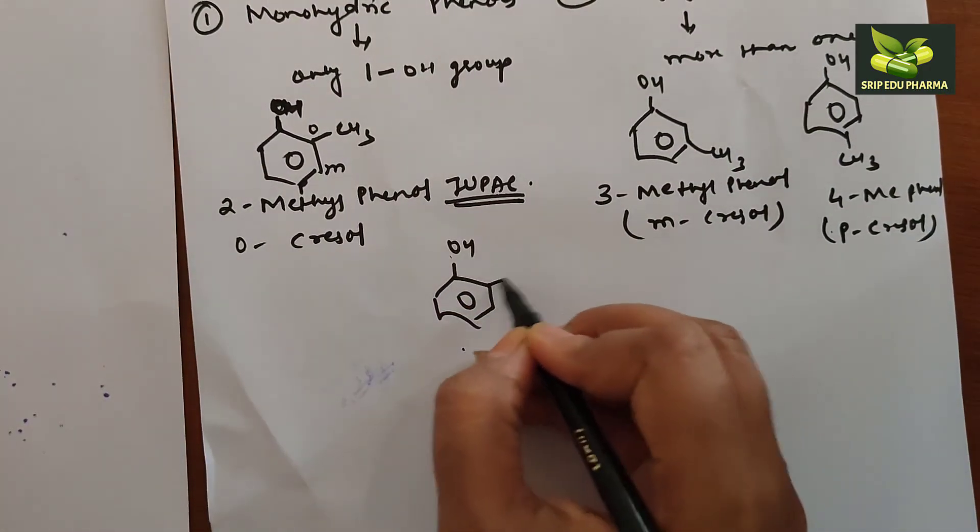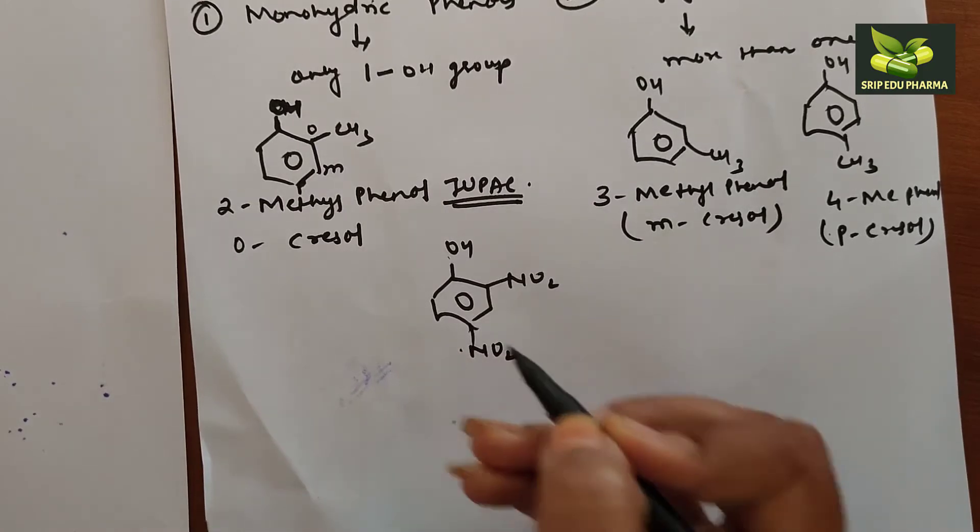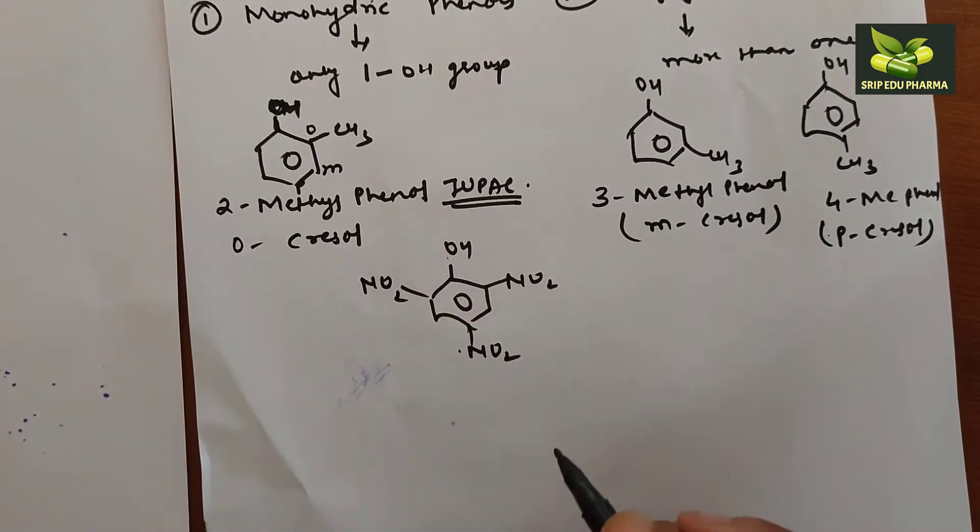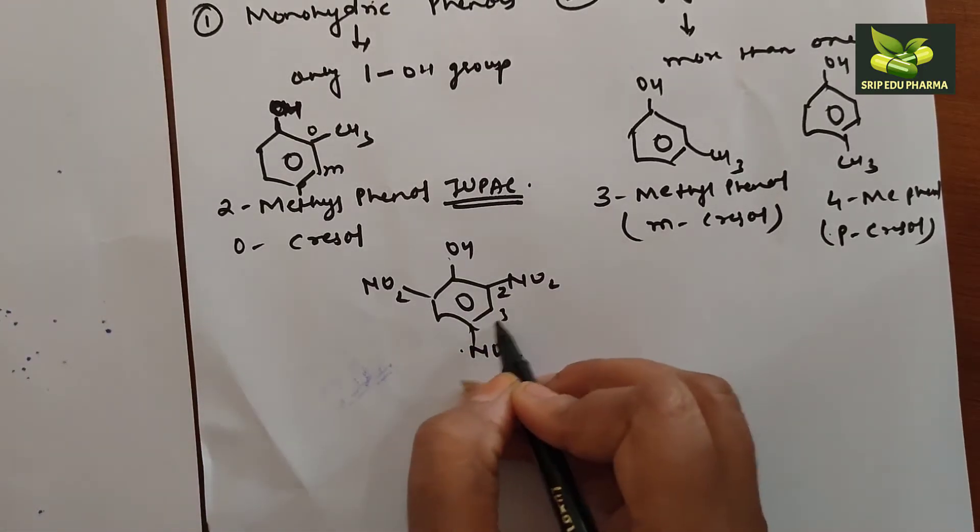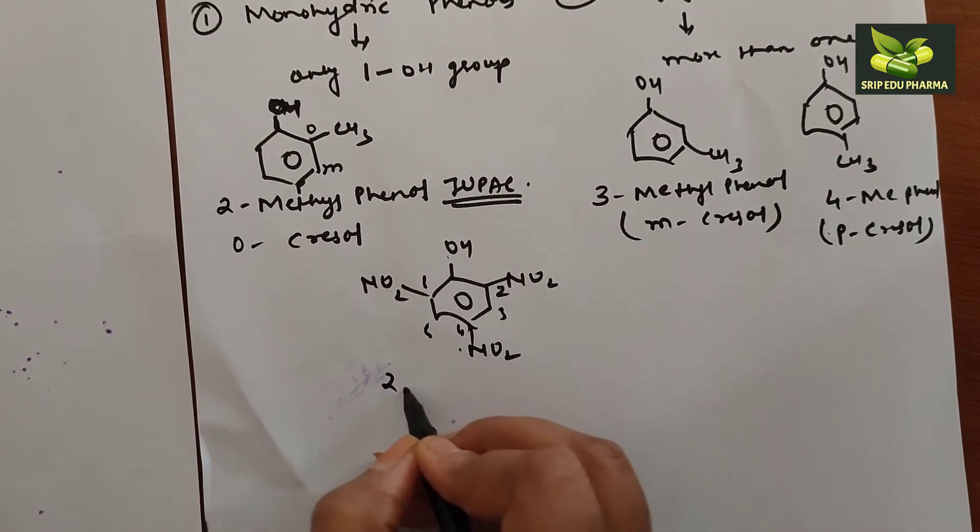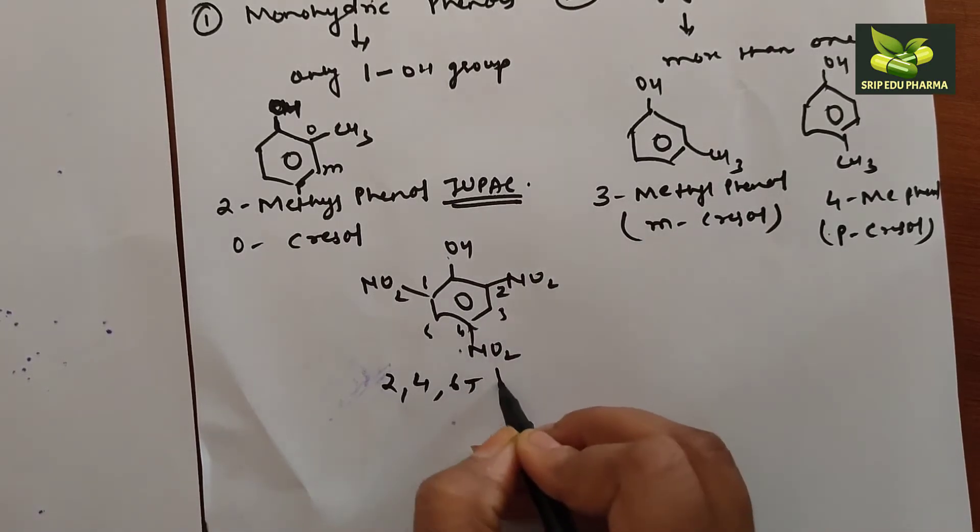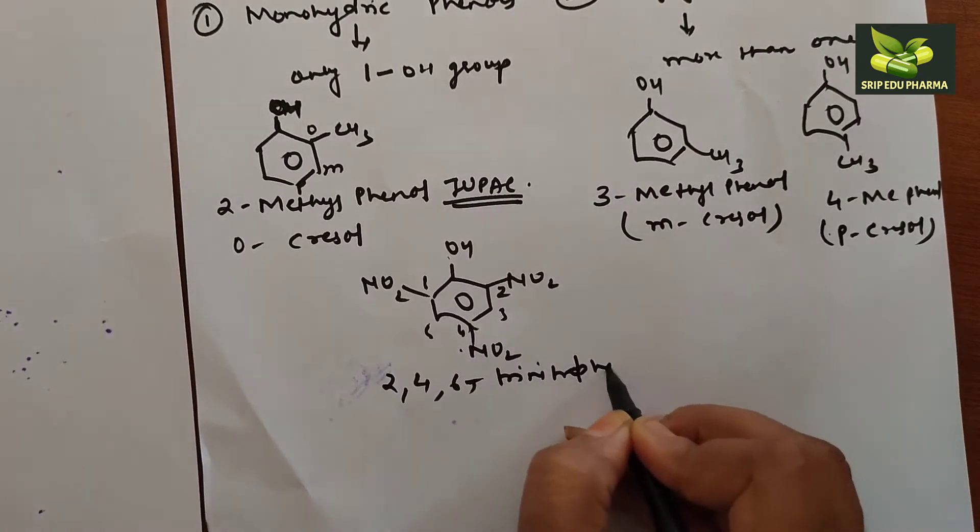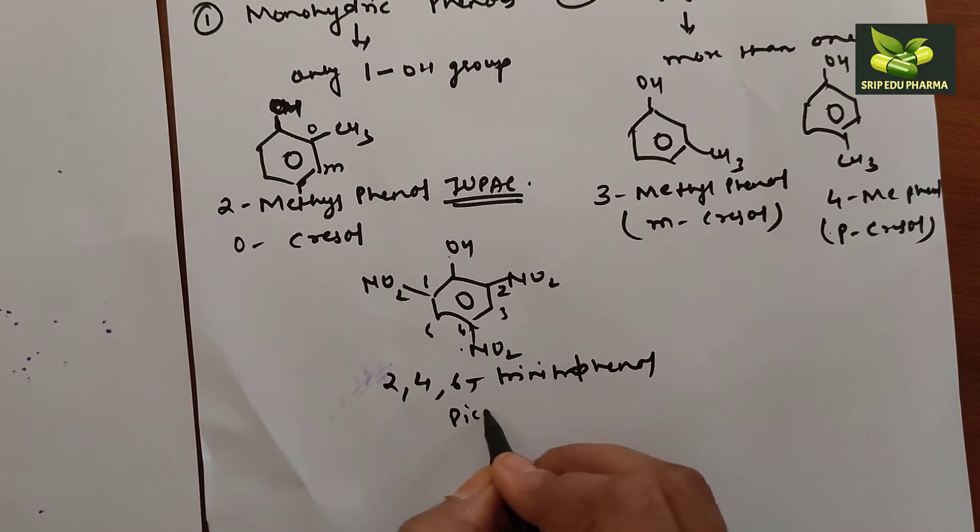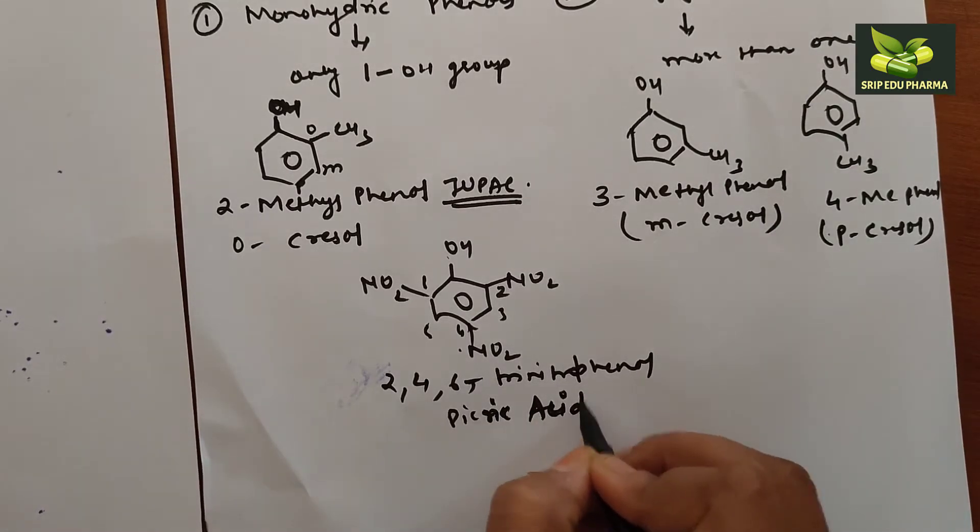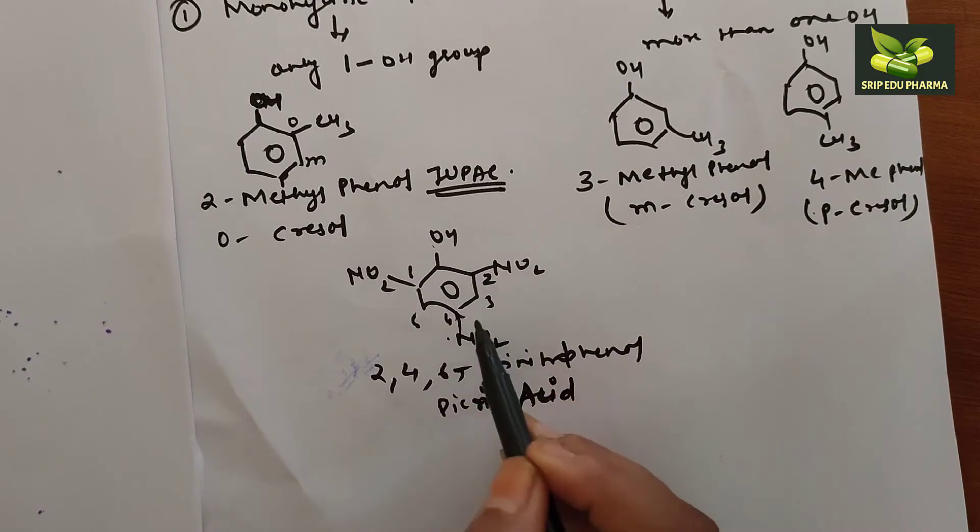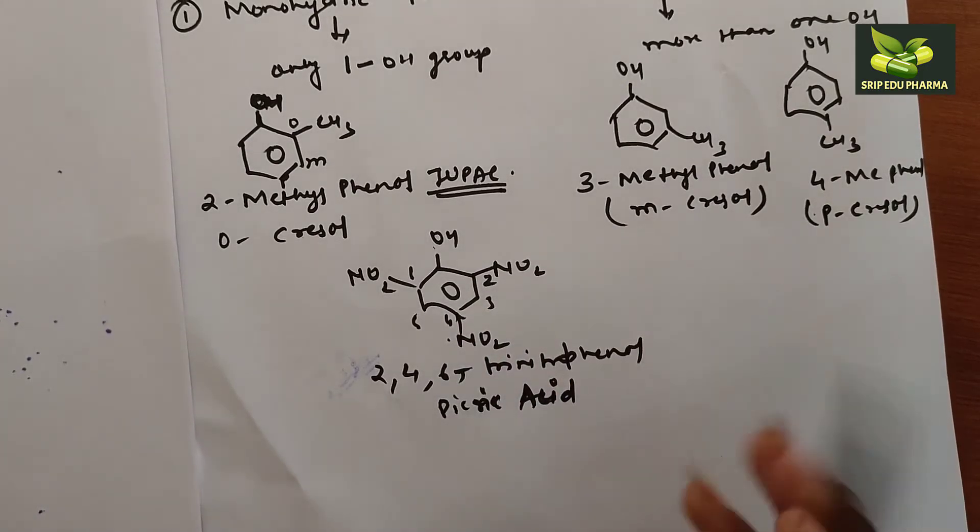One more example. This is OH, this is NO2, this is NO2, and this is NO2. You can name this very simply. This is second position, third, fourth, fifth, and sixth. So it is called 2,4,6-trinitrophenol. The common name is picric acid.